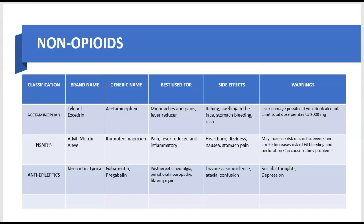Non-steroidal anti-inflammatory drugs, or NSAIDs — brand names include Advil, Motrin, and Aleve; generic names are ibuprofen and naproxen. These are best used as a fever reducer, as well as for pain and inflammation. Side effects include heartburn, dizziness, and nausea. Warnings: NSAIDs may increase the risk of cardiac events and stroke, there is a risk for GI bleeding, and NSAIDs are known to cause kidney damage if taken above the prescribed dose for an extended period of time.